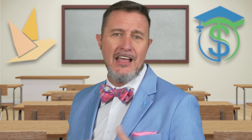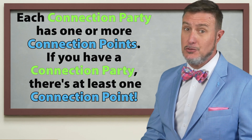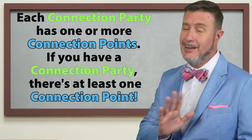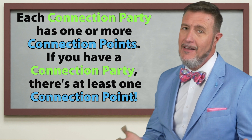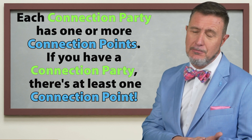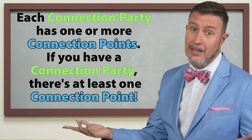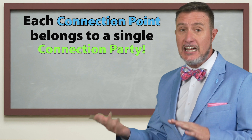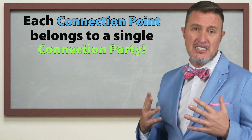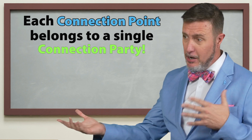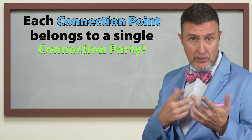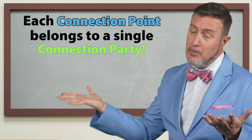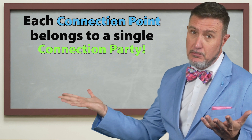What is the relationship between connection parties and connection points? Each connection party has one or more connection points — if you have a connection party, there's at least one connection point, probably going to be more. Each connection point belongs to a single connection party; it's a one-to-one relationship, but again, there can be multiple connection points.